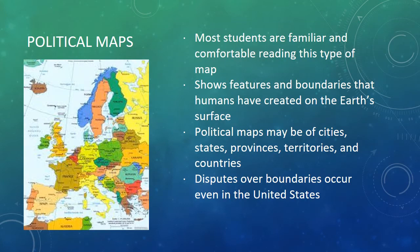Political maps are the type most students are familiar and comfortable reading. They show features and boundaries that humans have created on the earth's surface. Political maps may show cities, states, provinces, territories, and counties. Disputes over boundaries occur even in the United States.